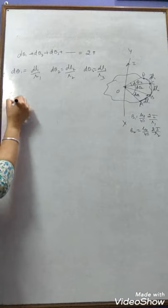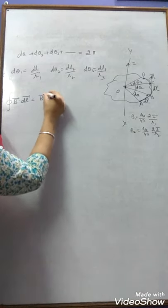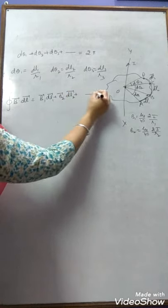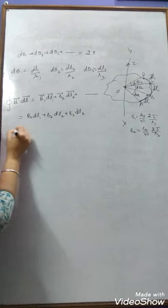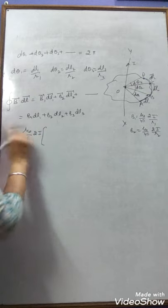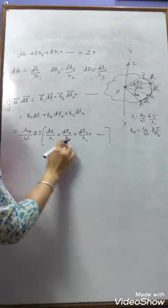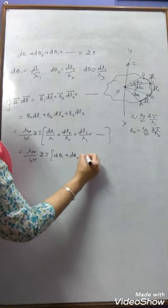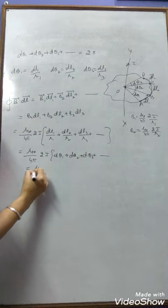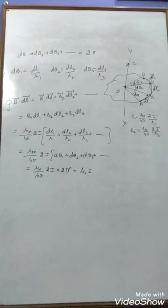Then ∮B⃗ · dL⃗ = B1 DL1 + B2 DL2 + B3 DL3 + ... = (μ₀/4π)(2I)(DL1/R1 + DL2/R2 + DL3/R3 + ...) = (μ₀/4π)(2I)(Dθ1 + Dθ2 + Dθ3 + ...) = (μ₀/4π)(2I)(2π) = μ₀I. This proves Ampere's Circuital Law for an arbitrary closed path. This is a very important result — the line integral ∮B⃗ · dL⃗ = μ₀I.